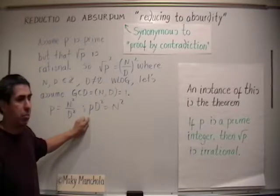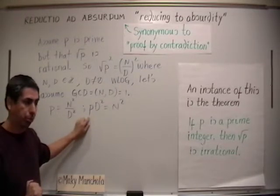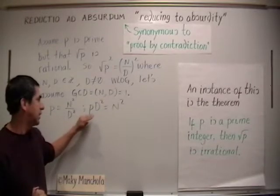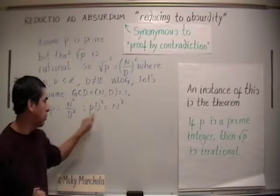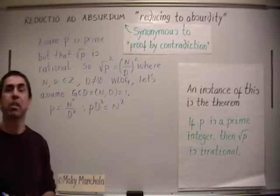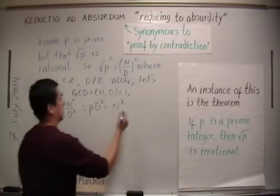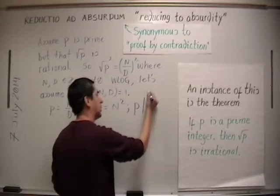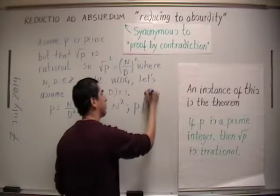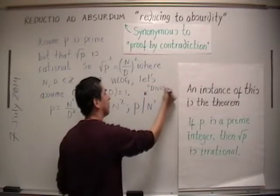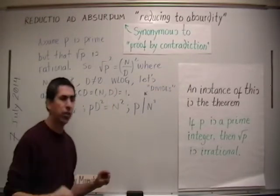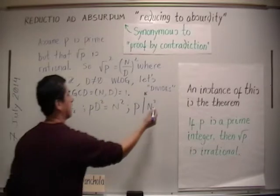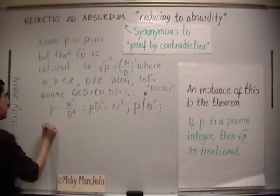Now, remember, p is a prime integer, meaning it is greater than 1. There is a fact in number theory that says if n squared is a multiple of prime p, then p divides n squared. Another fact of number theory states that if a prime divides the square of an integer, then it divides the integer itself. So p divides n squared leads to p dividing n.